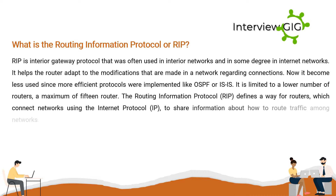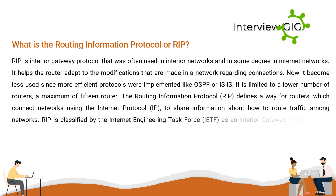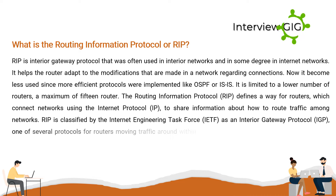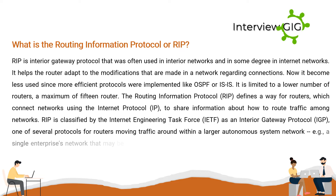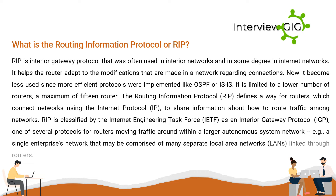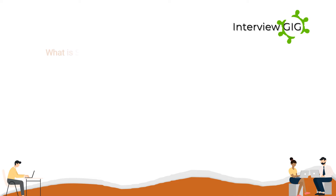The Routing Information Protocol (RIP) defines a way for routers, which connect networks using the Internet Protocol (IP), to share information about how to route traffic among networks. RIP is classified by the Internet Engineering Task Force (IETF) as an interior gateway protocol (IGP), one of several protocols for routers moving traffic within a larger autonomous system network, such as a single enterprise's network comprising many separate local area networks linked through routers.